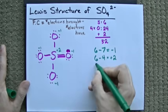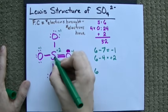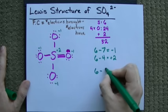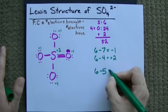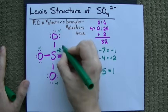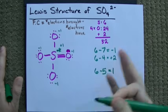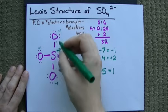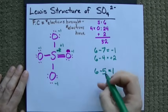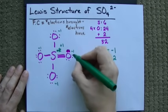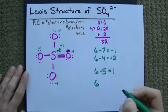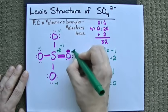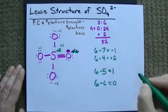This sulfur brought 6, and it has 1, 2, 3, 4, 5 electrons on it, which now gives it a formal charge of plus 1. That's lower. I like it. And the oxygen here, not the other oxygens, they're still minus 1. But this oxygen here brought 6, and it now has 1, 2, 3, 4, 5, 6. So its formal charge is 0. There's no formal charge here anymore. That's good.